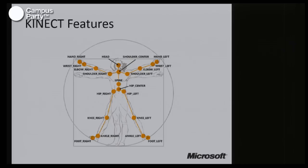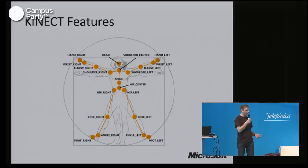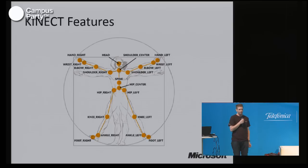For the skeletons which are tracked at the detailed level, we have for every joint of a human body the absolute position within the 3D world. For every single joint, we have the X, Y, and Z dimension within the range of the Kinect. Daniel will show a little bit later how easy it is to actually get to this information from the Kinect.